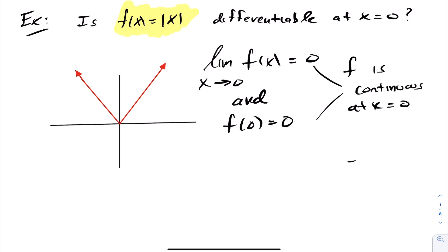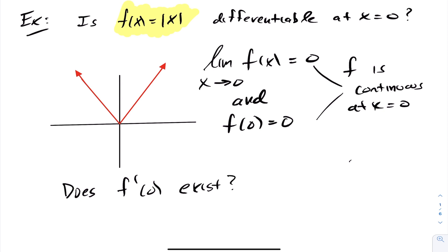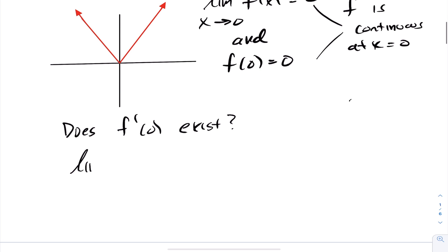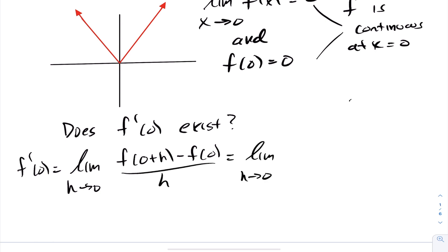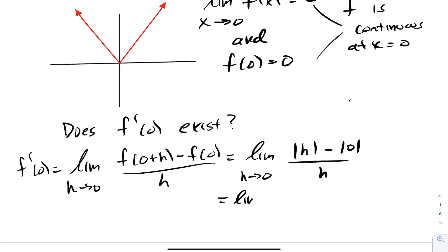But the question now becomes: is it differentiable? For f to be differentiable at 0, f' at 0 must exist. So does f' at 0 exist? Let's take a look at defining this. The limit as h goes to 0 of f' at 0 is defined as the limit as h goes to 0 of [f(0 + h) − f(0)] / h. That's going to be the limit as h goes to 0 of the absolute value of h minus the absolute value of 0, over h.